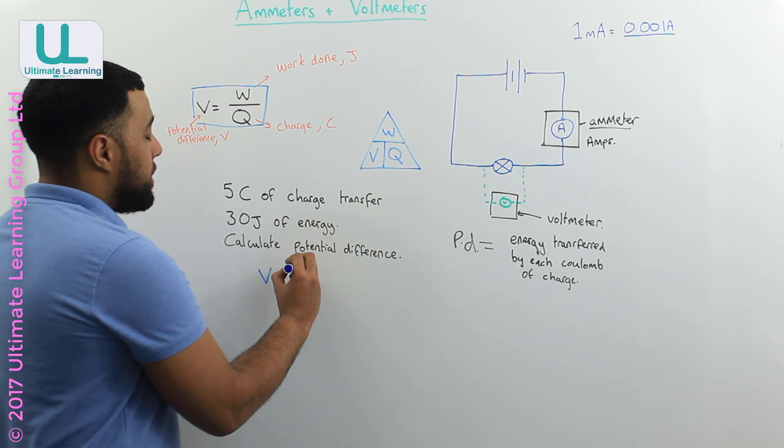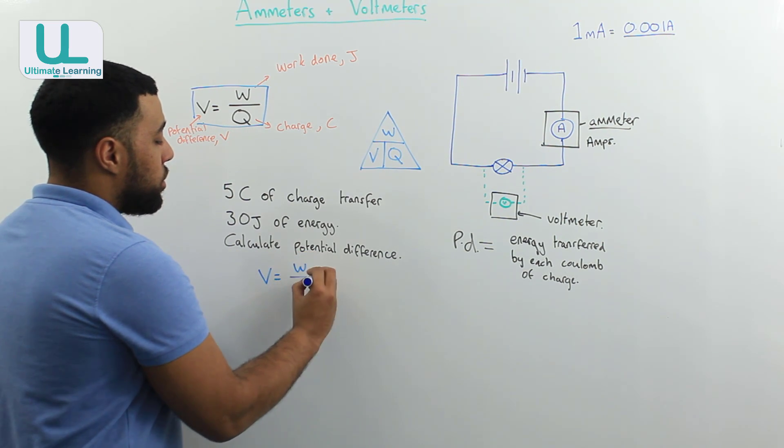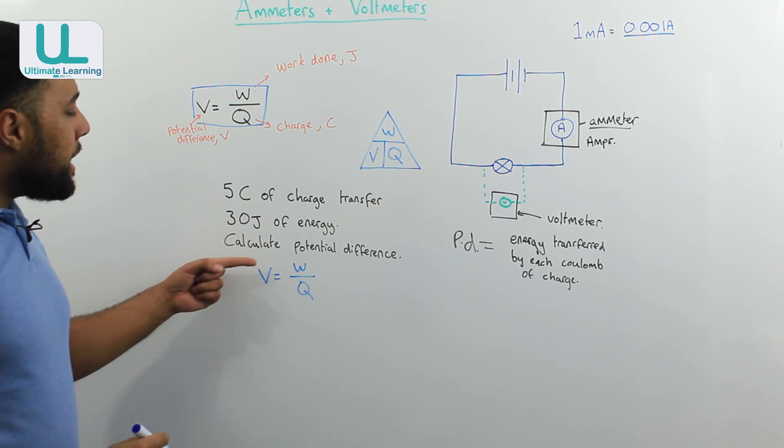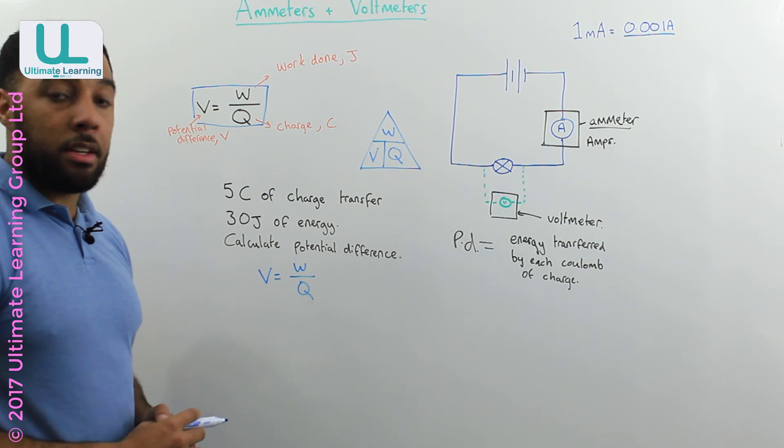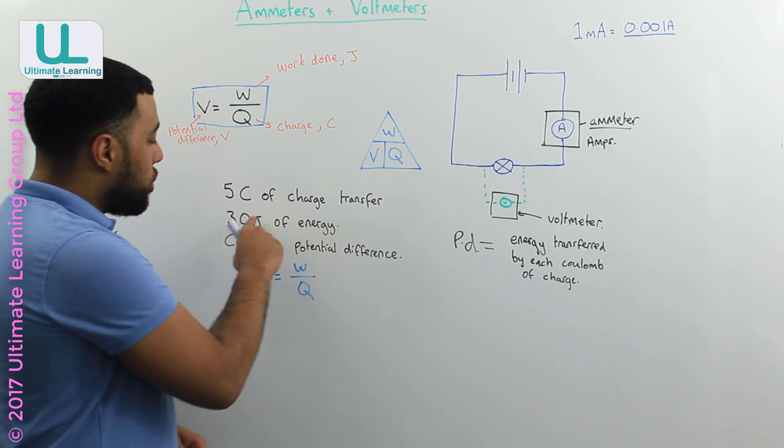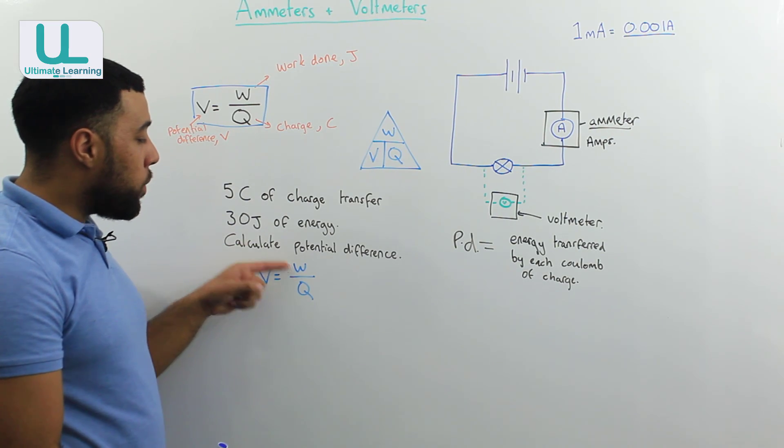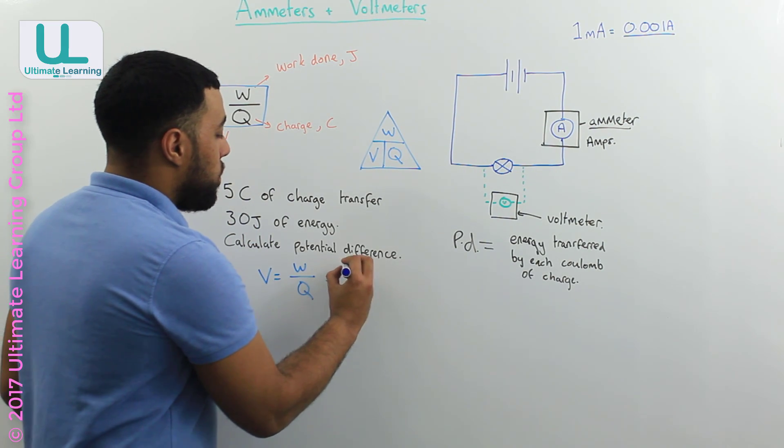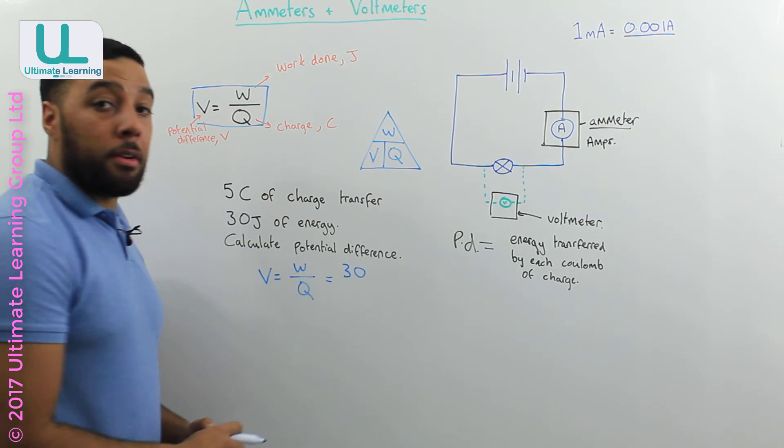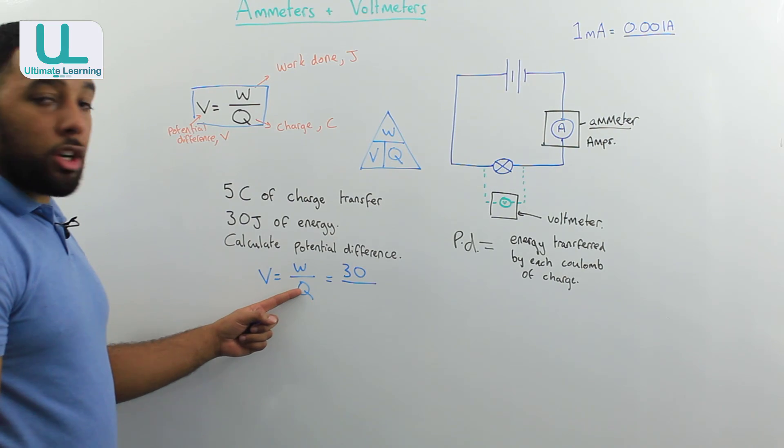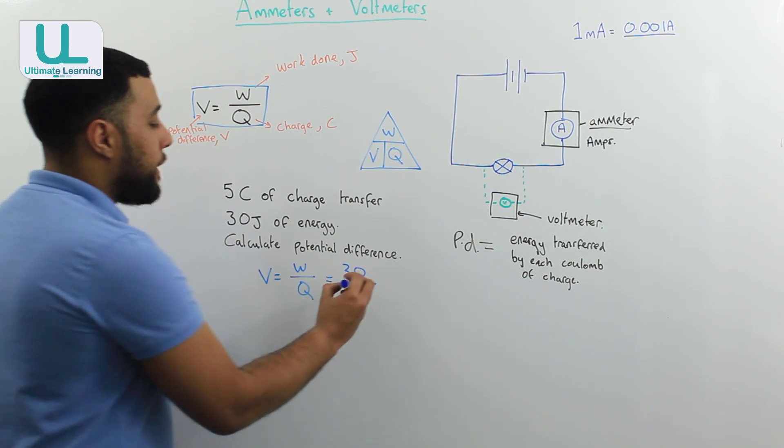which is potential difference is work done over charge. And now I can start putting my numbers in. Because work done is 30 joules, remember we calculate work done in joules, so that's 30, and I can divide that by the charge, which is 5.